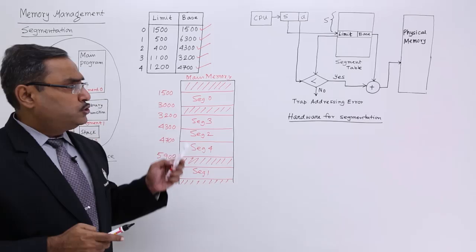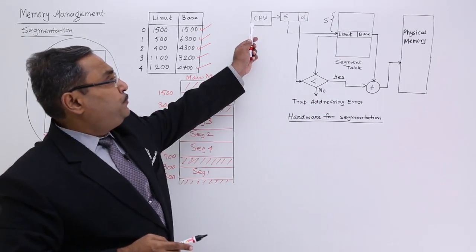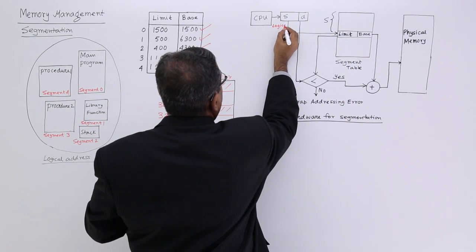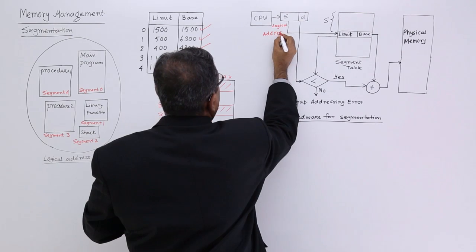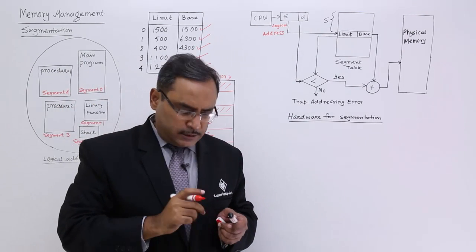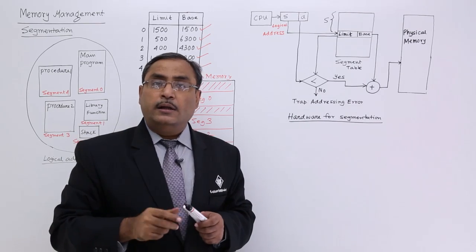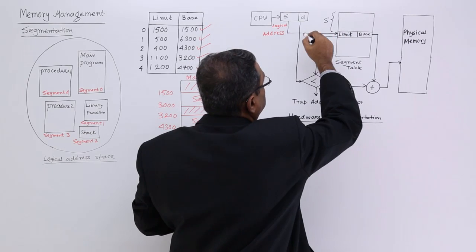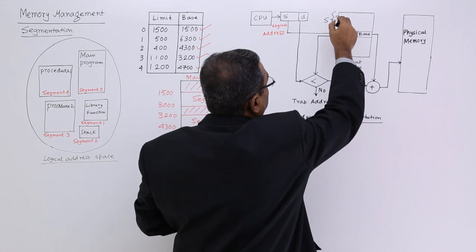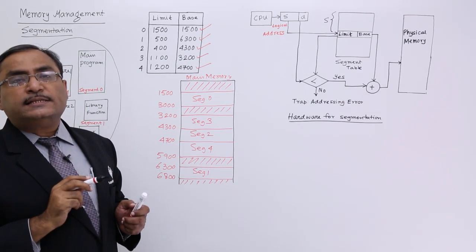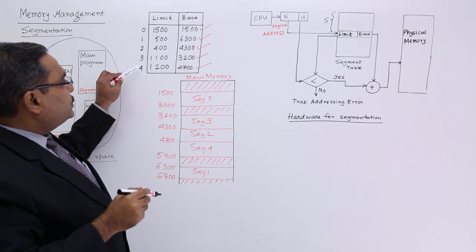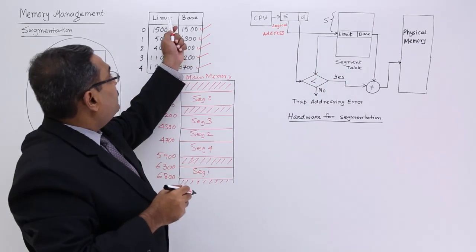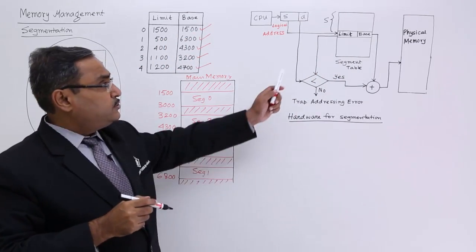Now let me show you the required hardware. The CPU will produce a logical address, which has two sections: one section is the segment number, and the other section is known as the displacement. Depending upon the segment number, we go to the S-th location in the segment table. For example, segment number 4 brings us to the fourth location in the table, which contains two things: one is the limit and the other is the base.